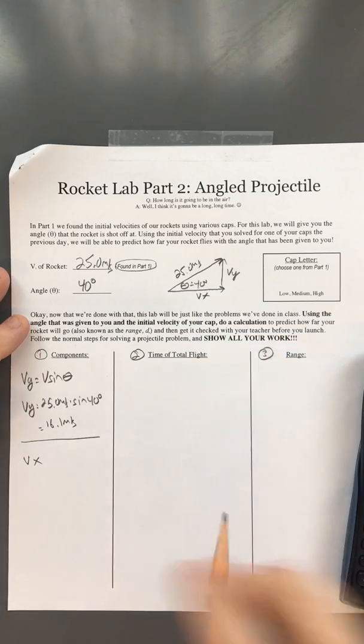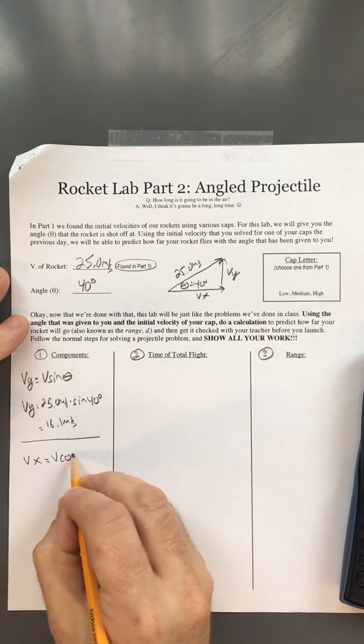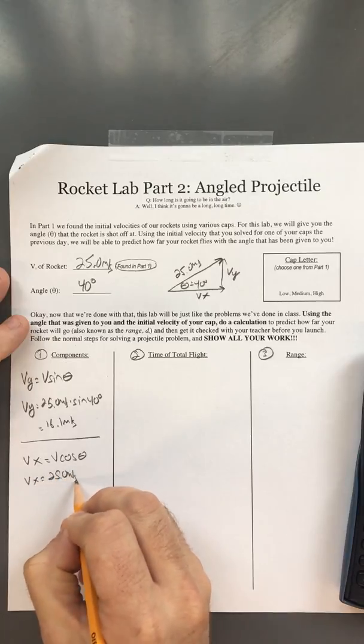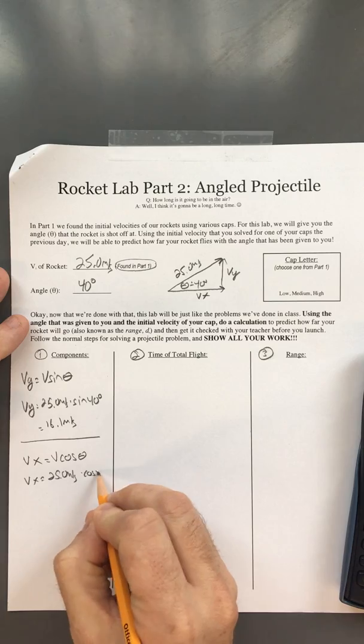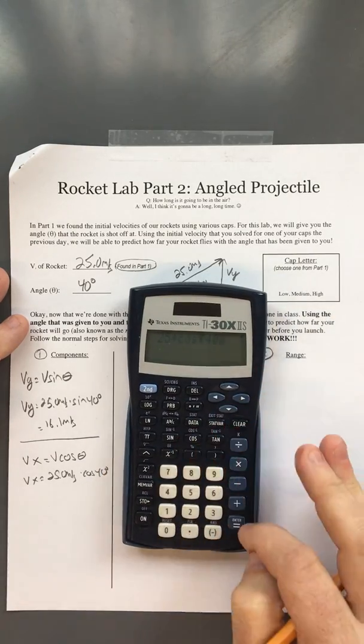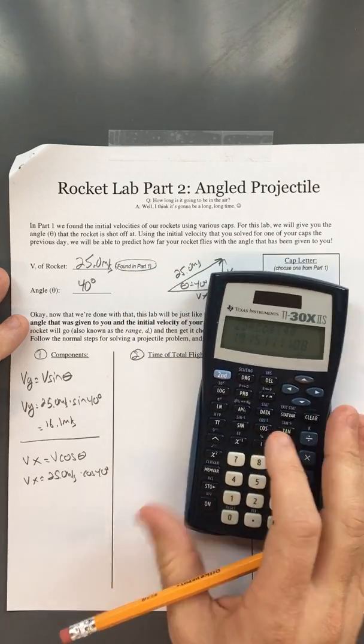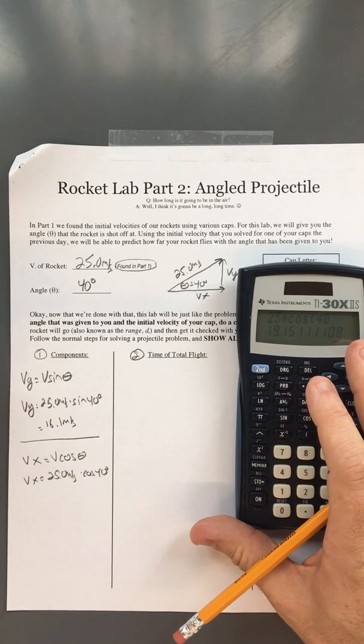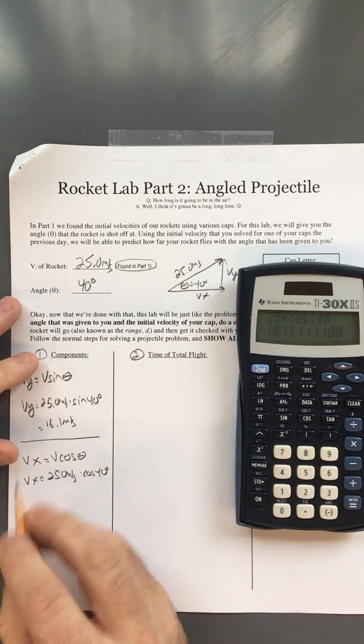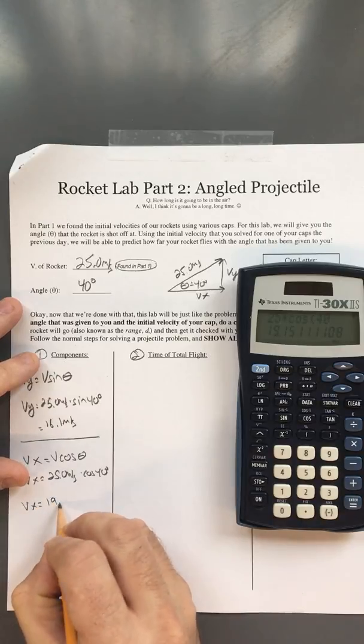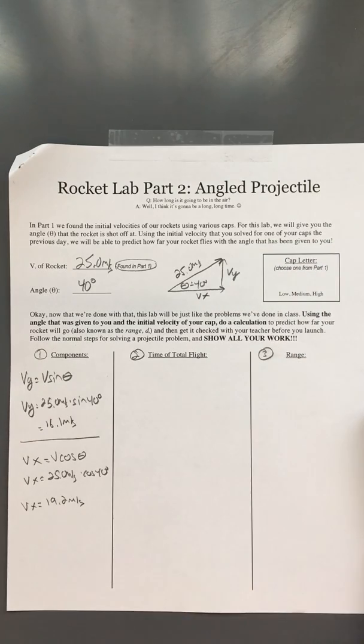Vx equals V cosine theta, so Vx equals 25 meters per second times cosine of 40 degrees. I put that in my calculator and get 19.15 meters per second for Vx. We'll round that to 19.2 meters per second. So those are our components.